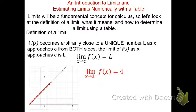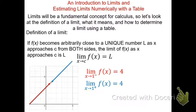Now look at what happens as we approach x equals 1 from the right. As we approach 1 from the right, the graph also converges to a y-value of 4. As we get closer and closer to x equals 1, the y-value is getting closer and closer to 4. We show the limit of f as x approaches 1 from the right using a positive sign, and it also equals 4.